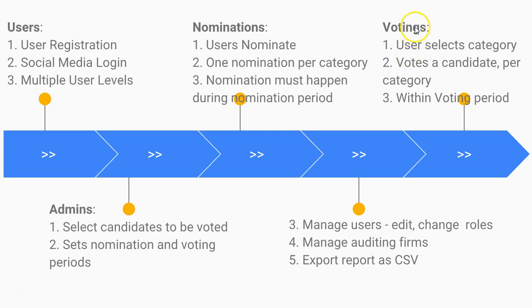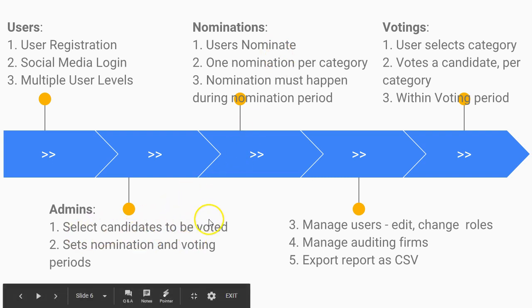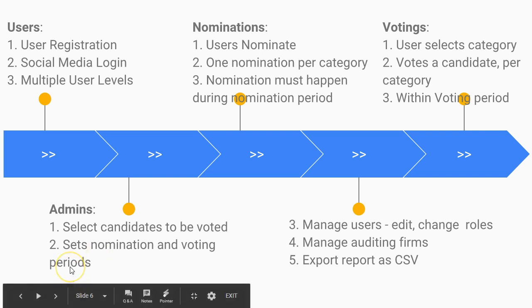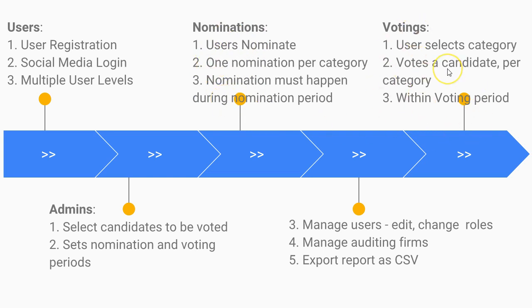After the nomination period expires, the admin will select candidates to be voted for — let's say three candidates per category. Admin also sets the nomination and voting periods, specifying which time window is for nominations and which is for voting.